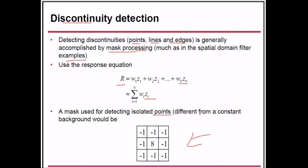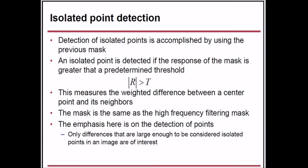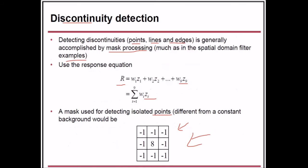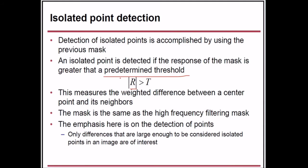The mask used for detecting isolated points different from a constant background has all coefficients summing to zero. The isolated point is detected if the response of the mask is greater than a predetermined threshold T, i.e., |r| > T. This measures the weighted difference between a center point and its neighbors. The mask is the same as the high-frequency filtering mask, and only differences large enough to be considered isolated points in the image are of interest.